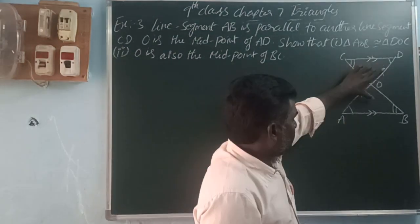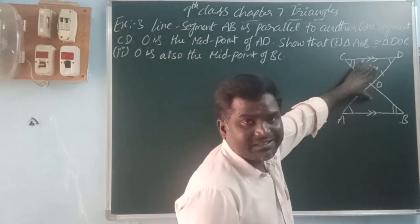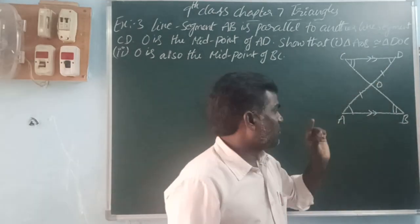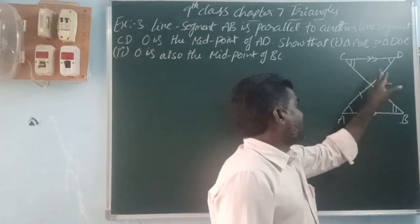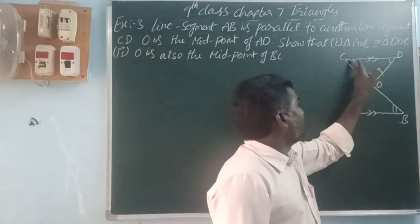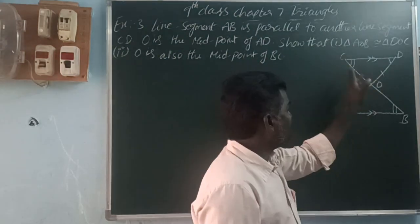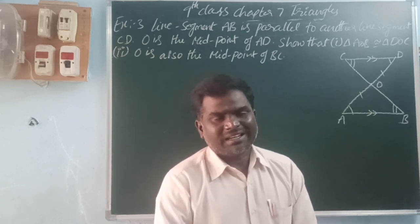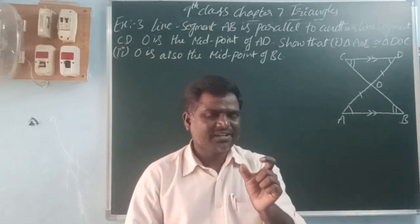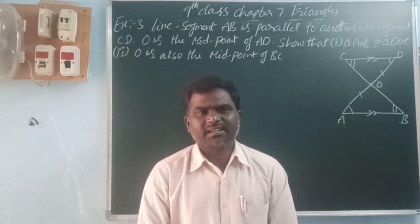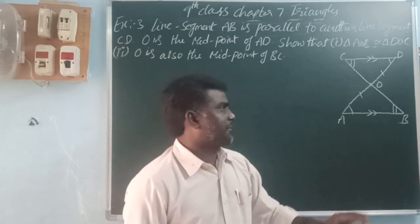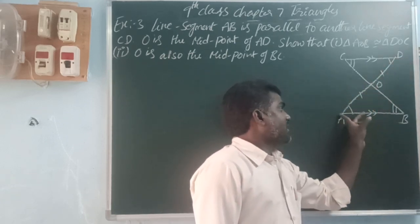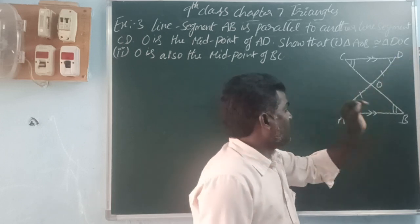Now here we have two triangles: triangle AOB and triangle DOC. Angle A is equal to angle D, and angle B is equal to angle C. Next, the midpoint: a point dividing a line segment into two equal parts is called the midpoint. So O is the midpoint of AD, therefore AO is equal to OD.